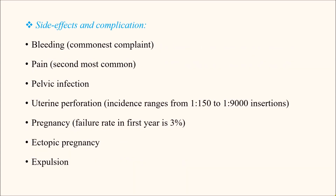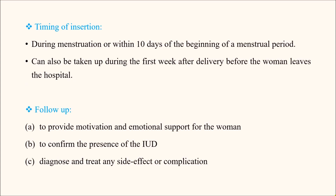Complications and side effects of IUD insertion: the most common complaint is bleeding, followed by pain. There is also a chance of pelvic infection. Uterine perforation is rare but can occur, with an incidence of 1 in 150 to 1 in 9000 insertions. Pregnancy can also occur — the failure rate is about 3% in the first year. Very rarely, ectopic pregnancy can occur, and expulsion can occur, either partial or complete. Because of these side effects and complications, follow-up by the recipient is essential.